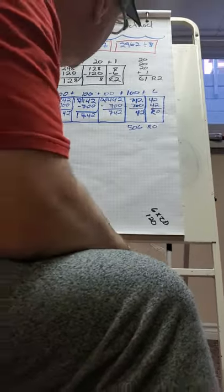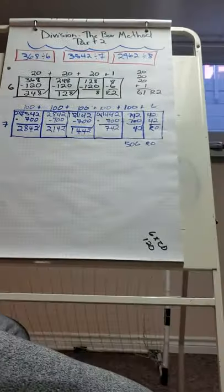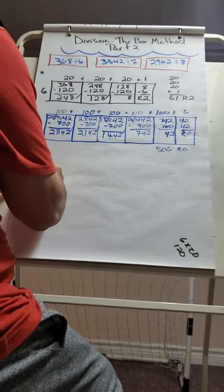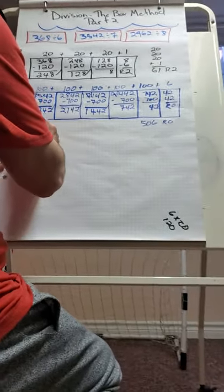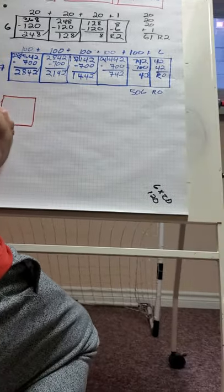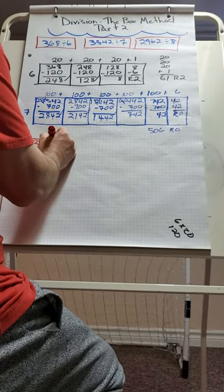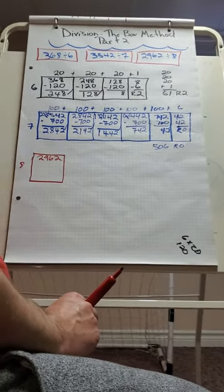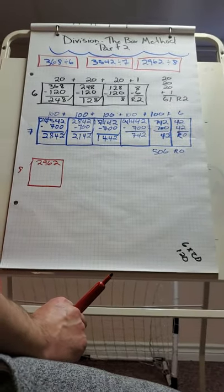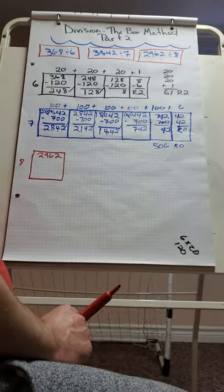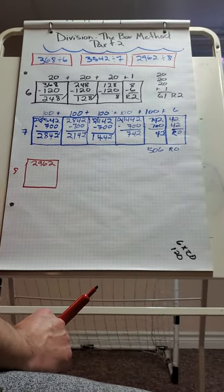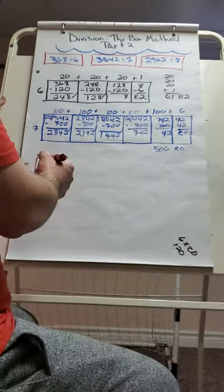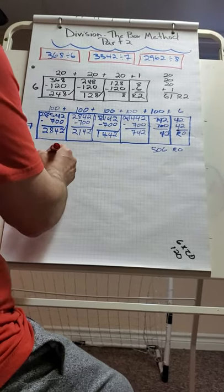One more question: 2962 divided by 8. I set up my box with 8 as the divisor and 2962 as the dividend. What can I multiply the divisor by to reduce the dividend with a friendly number? 8 times 5 is 40 — too many boxes. 8 times 10 is 80 — still a lot. So I'll do 8 times 100, which is 800, and that will reduce 2962 much quicker. I put 100 up top.